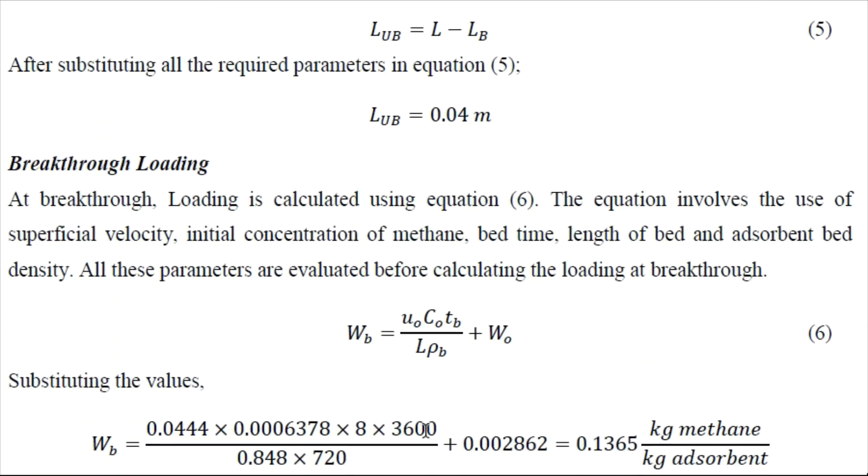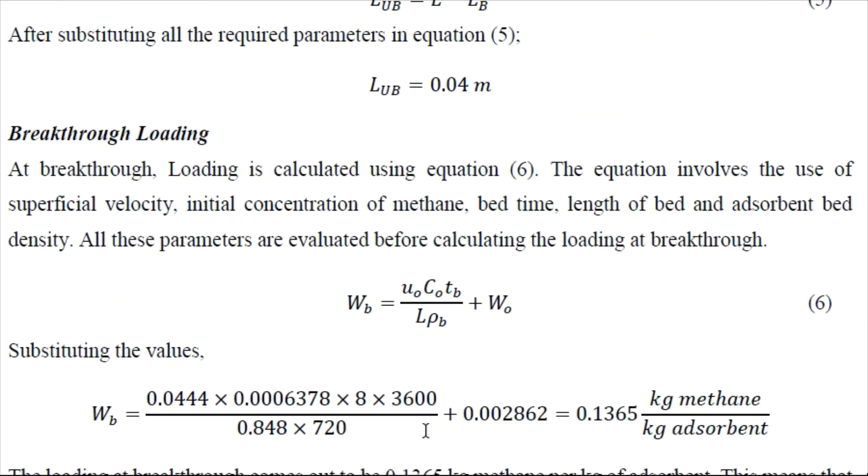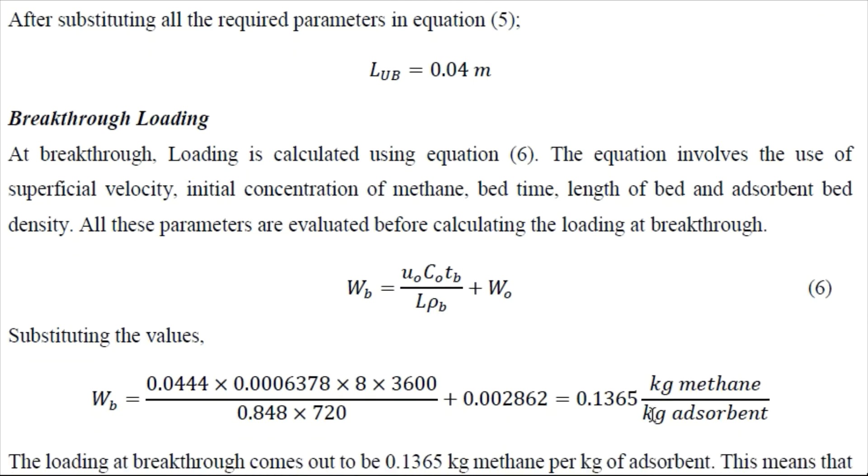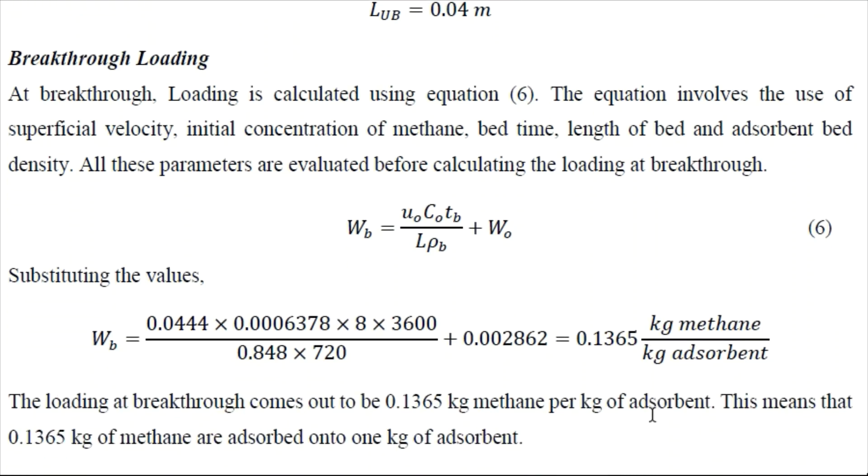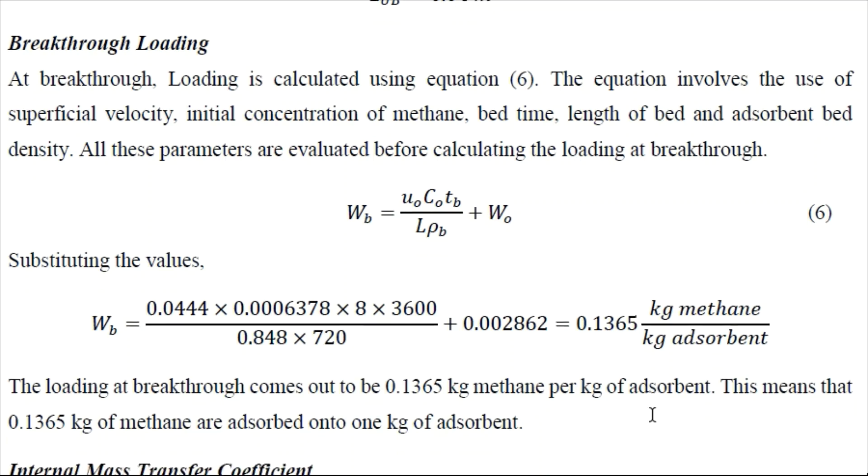So now we can determine the breakthrough loading which is given by this formula. So we have all of these parameters. So we can substitute these values. So we obtain the breakthrough loading as 0.1365. So we can clearly see that this loading is less than the equilibrium loading that is 0.1431. So which means that operation is good.